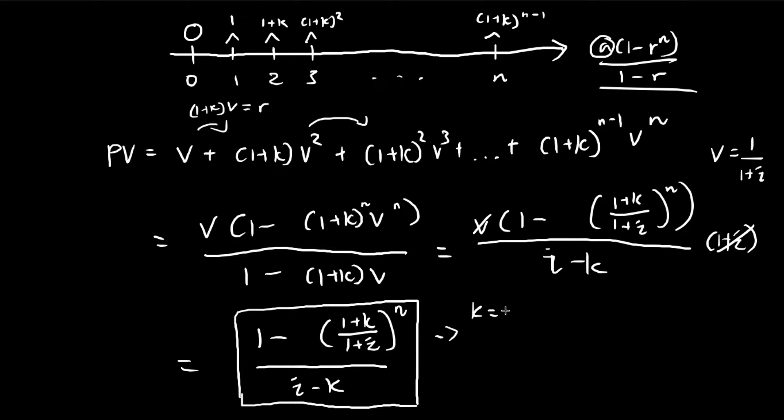When k equals 0, this formula reduces to (1 - v^n) over i. If k is 0, the numerator is just 1, then it's just i. i minus 0 is just i. This is (1 - v^n) divided by i, which is just the normal annuity. This makes perfect sense because when k equals 0,